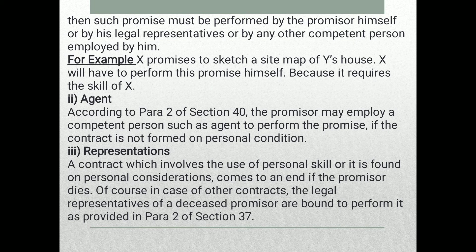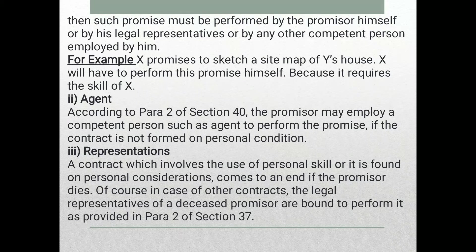For example, X promises to paint a picture for Y. X must perform this promise himself because it requires the personal skill of X. Regarding agents — according to Section 40, the promisor may employ a competent person such as an agent to perform the promise.